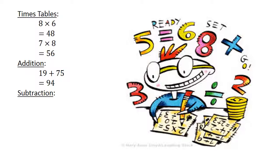Subtraction. 58 minus 79 equals negative 21.